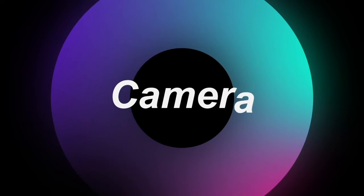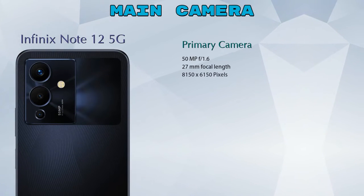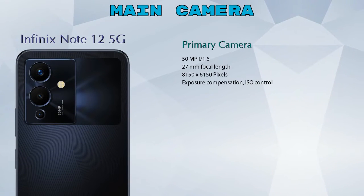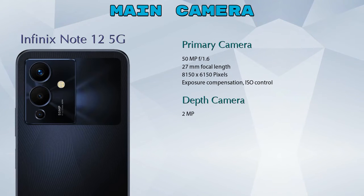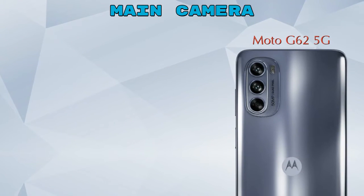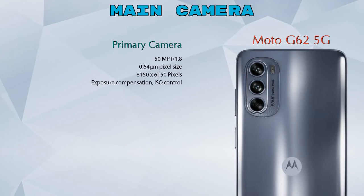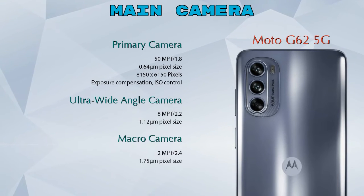Let's see the details about our favorite feature — camera. First of all, talking about the rear camera: we can see two cameras in the Note 12 5G, which are the primary camera and a depth camera. In the Moto G62 5G we can see three cameras: primary camera, ultra-wide angle camera, and a macro camera.